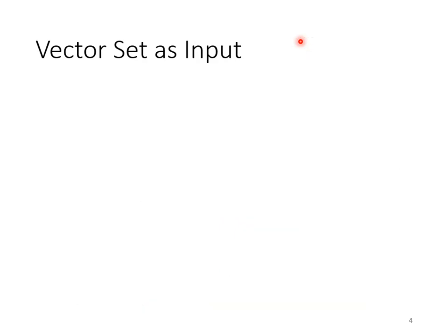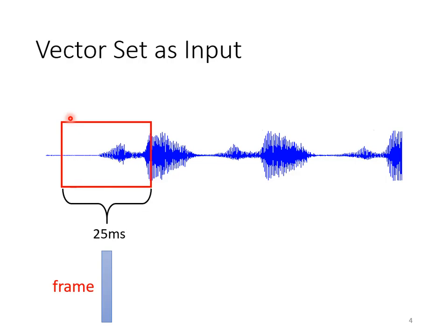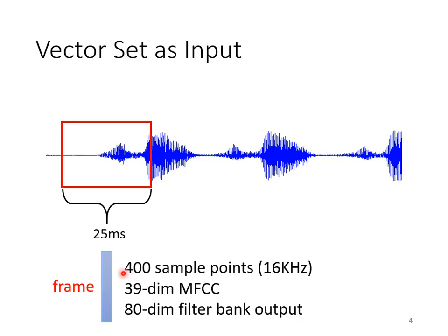Are there any other tasks where a sequence of vectors is taken as input? For example, in homework 2, an audio sequence is actually a sequence of vectors. We take a portion of the audio sequence and call it a window, and transform the information in this window into a vector. This vector is called a frame. In audio processing, we call a vector a frame. Usually, the length of this window is 25 milliseconds. There are hundreds of methods to transform a short audio signal into a frame, and I won't go into the details here.